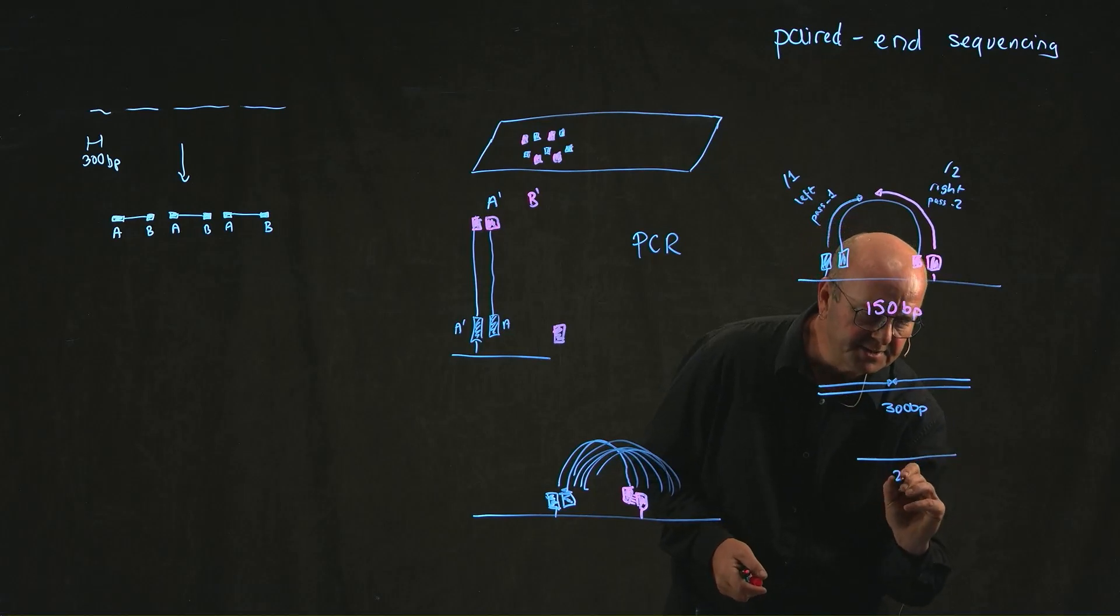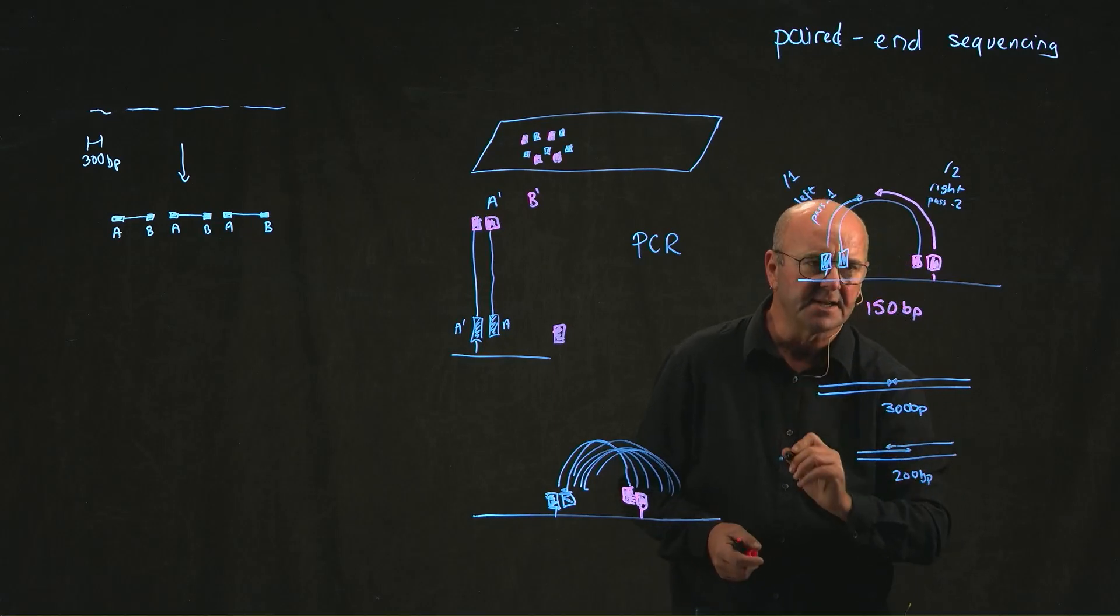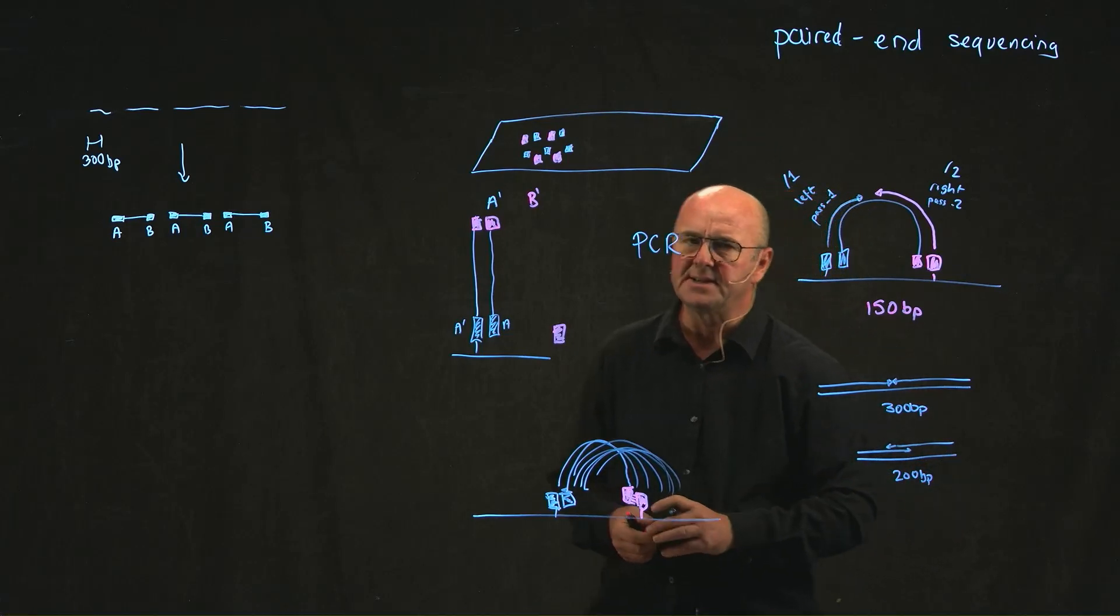If we reduce our fragment size to say 200 bases, and we read 150 bases from this end and 150 bases from this end, because our fragment's 200 bases, we're going to have about 50 bases of overlap.